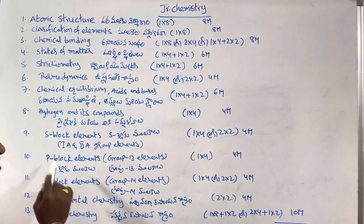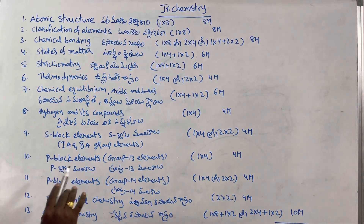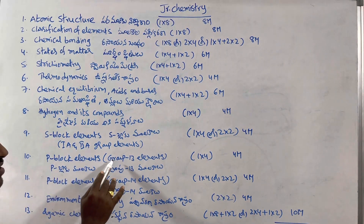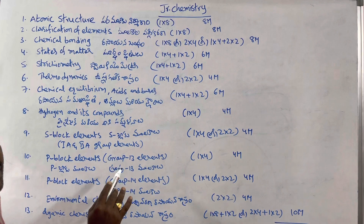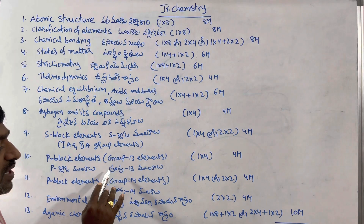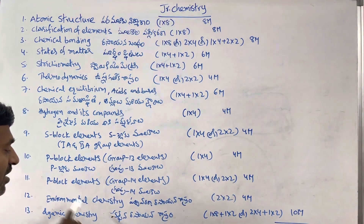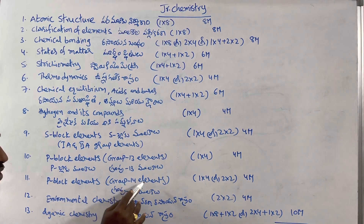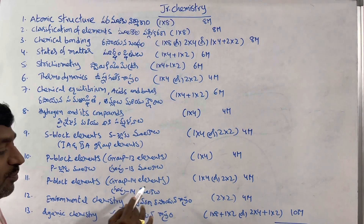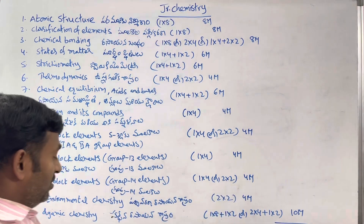Next, P-Block Elements. In P-Block Elements, Group 13 elements: 4 marks. Next, P-Block Elements, Group 14 elements: 4 marks.